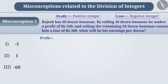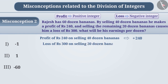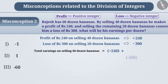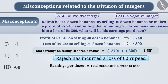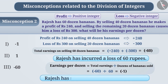Rajesh makes a profit of Rs. 240 by selling 40 dozen bananas, which we represent by plus Rs. 240. Similarly, on selling 20 dozen bananas, he suffers a loss of Rs. 300, which we represent as minus Rs. 300. The total earning of selling 60 dozen bananas equals Rs. 240 plus minus Rs. 300, that is minus Rs. 60. The minus sign shows that Rajesh has incurred a loss of Rs. 60. Hence, his earnings per dozen equals total earnings divided by dozens of bananas sold, which is minus Rs. 60 divided by 60, equal to minus 1, representing a loss of Rs. 1 per dozen.